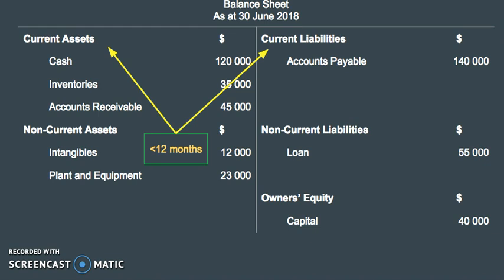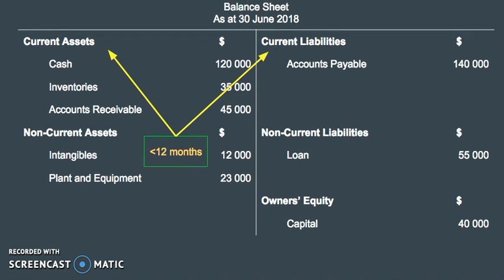And current liabilities — we've got accounts payable, money that is owed to other people. So then we've got non-current assets and non-current liabilities. These are items that, in the sense of assets, can be converted to cash in a time frame greater than 12 months, and non-current liabilities are items that need to be repaid in a time frame greater than 12 months. So for example, intangibles, plant and equipment, and loans on the side of non-current liabilities.